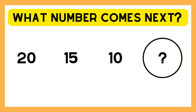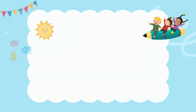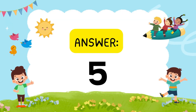What number comes next? Look, it comes in fives. 20, 15, 10. What comes next? I think you can do it. 3, 2, 1. The answer is 5.